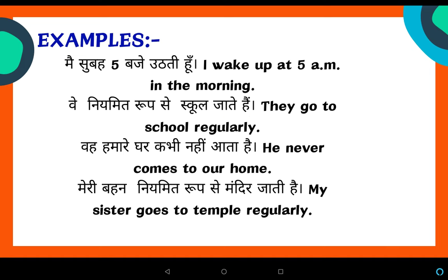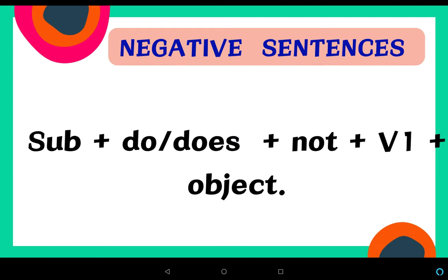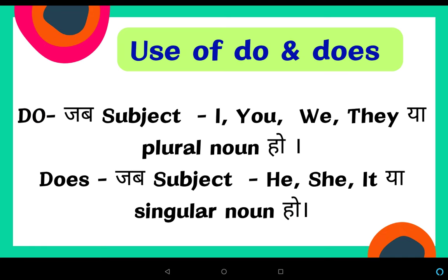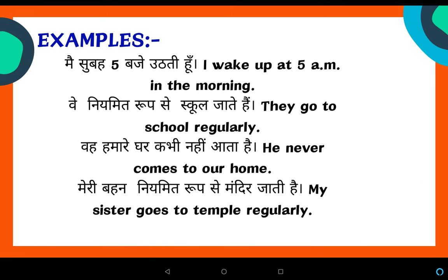'वे नियमित रूप से school जाते हैं.' The subject is 'वे' which is 'they'. The action is 'जाना' — go. Since the subject is 'they', only the verb's first form is used. They go to school regularly.